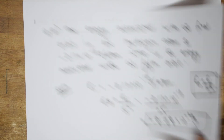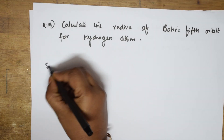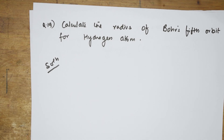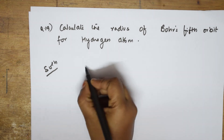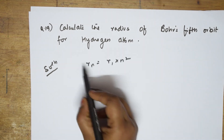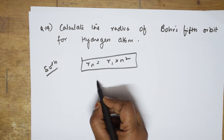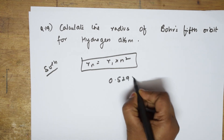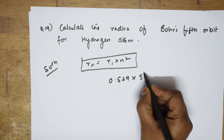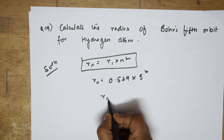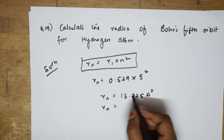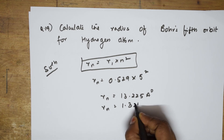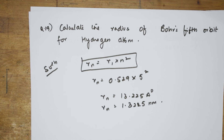Let us now do the 19th numerical. Calculate the radius of Bohr's fifth orbit of hydrogen atom — a simple numerical. The formula is Rn = R1 × n². So R5 = 0.529 × 5² = 0.529 × 25 = 13.225 angstroms. Converting to nanometers by shifting the decimal: 1.3225 nanometers. That is the answer.